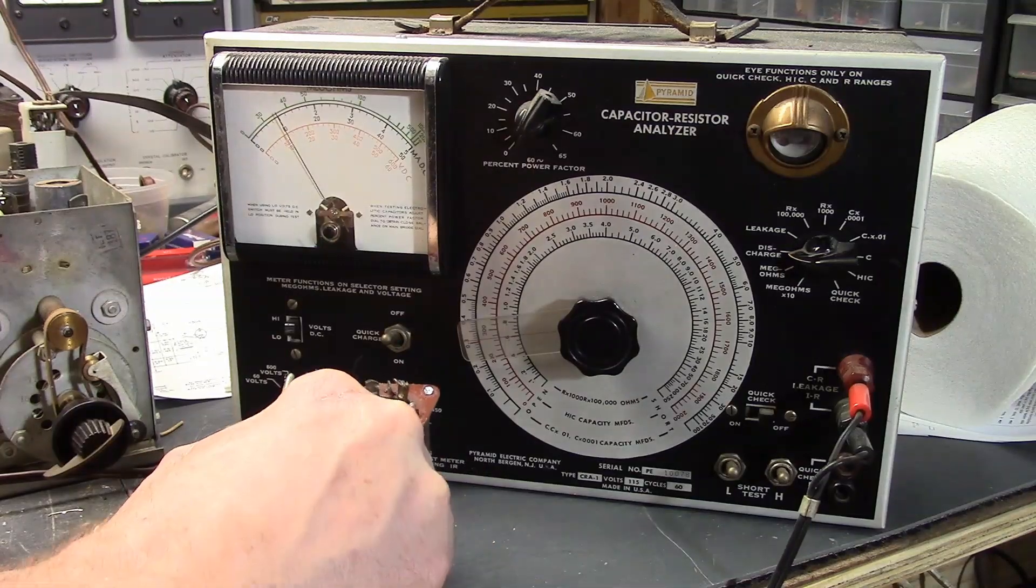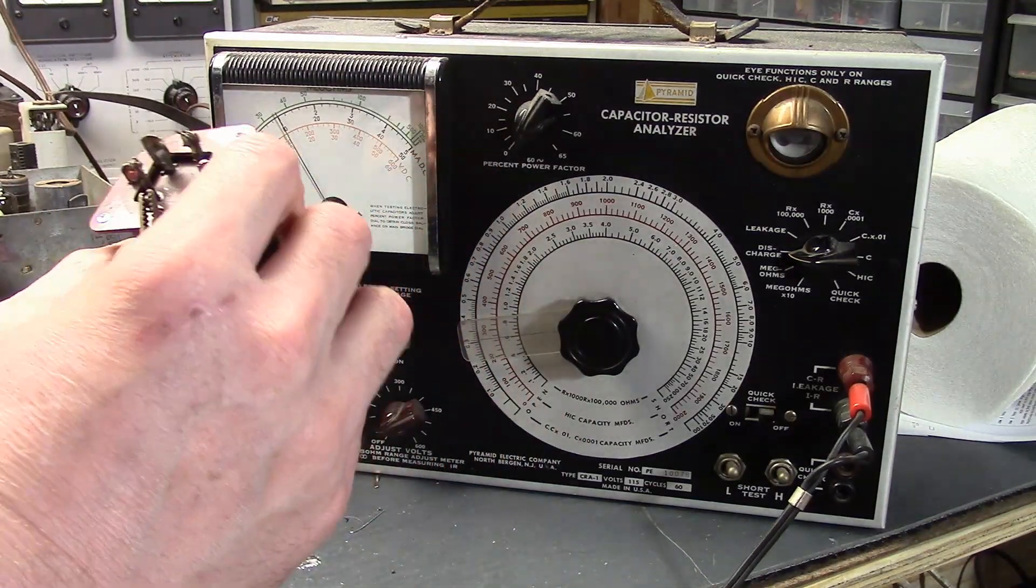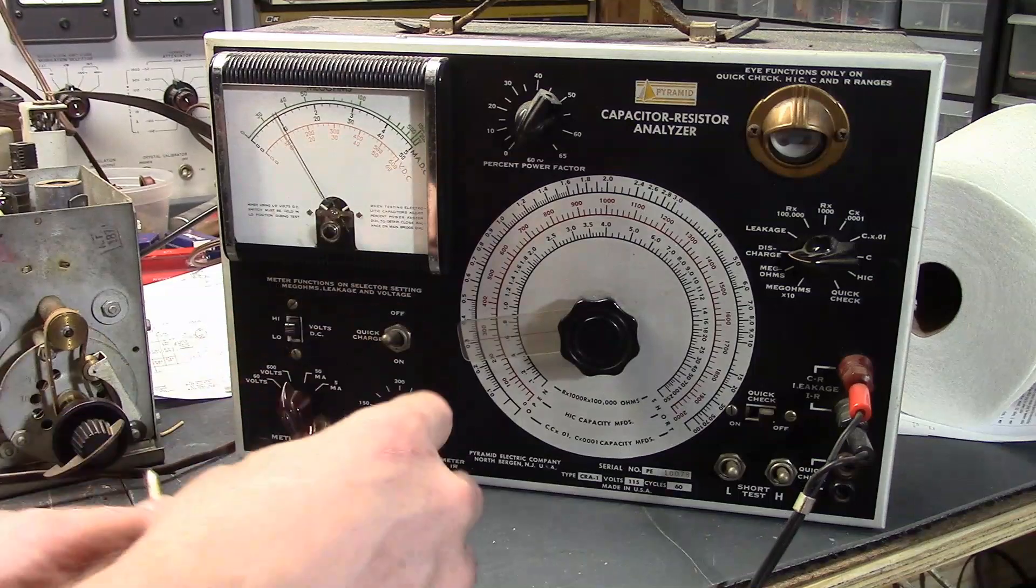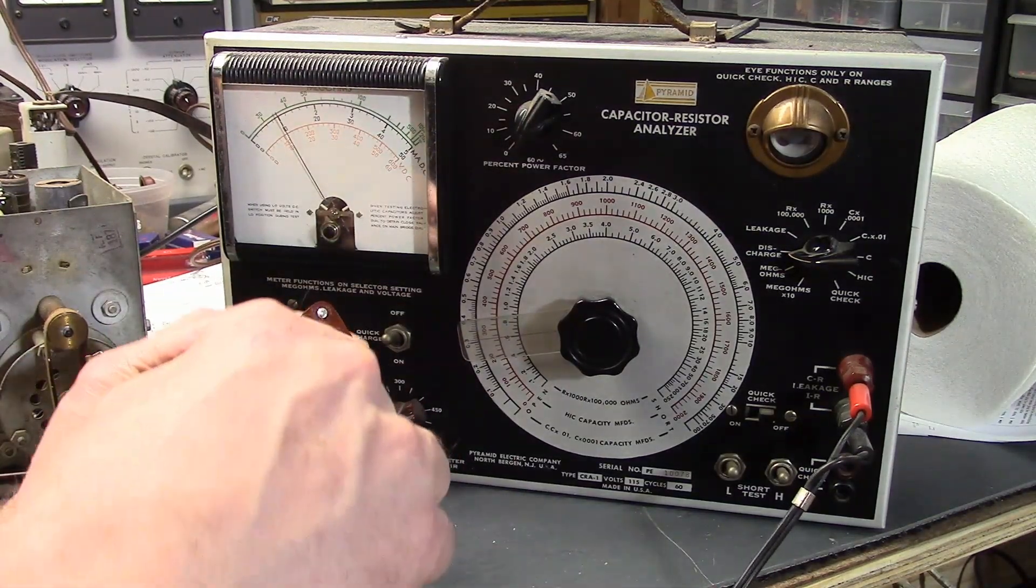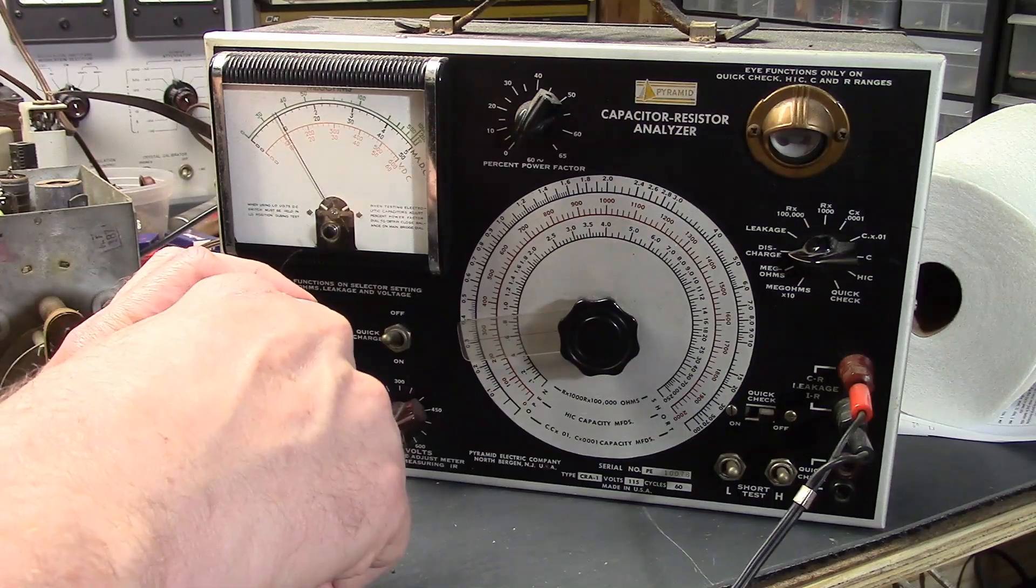So the can is negative. Let's go to one of the 40 microfarad, so there's two 40 microfarad sections and a 10 microfarad. Let's check one of the 40's.